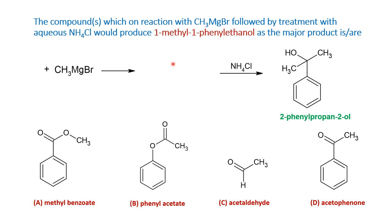Before we answer this question, there are certain things we have to keep in mind. Aldehydes will give predominantly secondary alcohols, and ketones will give tertiary alcohols. Formaldehyde will give a primary alcohol. And esters will give tertiary alcohols via a ketone intermediate. Now we would like to know which among these will be the suitable starting materials for this desired product. Let us also see the importance of ammonium chloride and the reaction mechanism of esters.